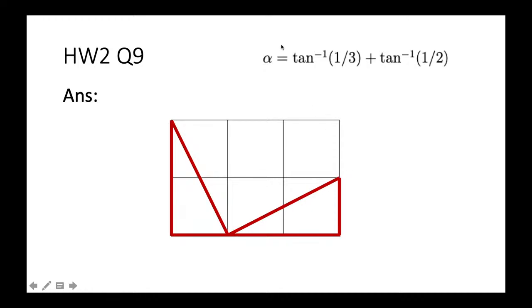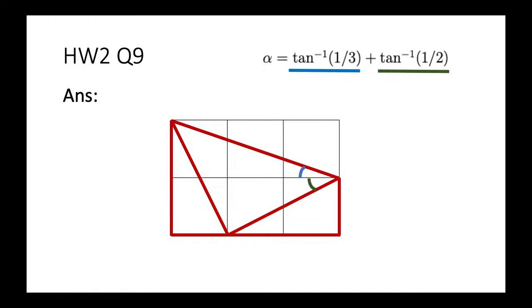You can see a square forming here. Drawing one more line, we see this is half of a square, and the two angles add up to 45 degrees. The blue angle is arctan(1/3) — you have side one and side three — and the green angle is arctan(1/2), since the two green angles are equal. That is how we show this result using a very simple geometric method.